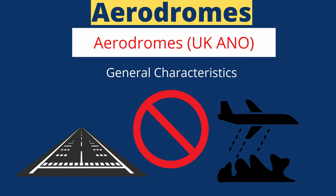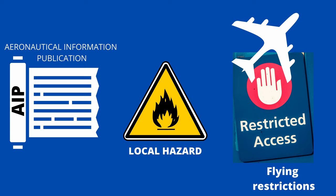Aerodromes — UK General Characteristics. An aerodrome is an area of land or water used for the taking off and landing of aircraft. Aerodromes are divided into many categories depending on their use. The Aerodromes section of the UK Aeronautical Information Publication contains an aerodrome directory giving specific information on physical characteristics, local hazards, and flying restrictions.